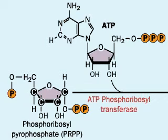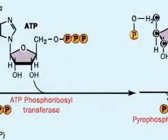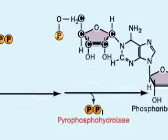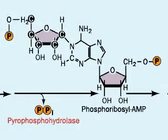Histidine's ultimate precursor is ribose 5-phosphate. Starting with phosphoribosyl pyrophosphate, PRPP, an ATP is attached in the first step as two pyrophosphates are released, making phosphoribosyl AMP.